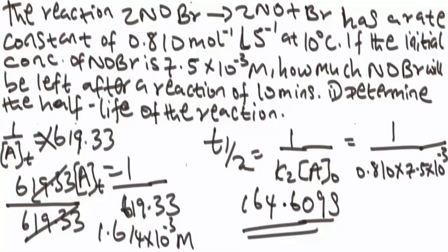Note that the type of reaction in a given problem can easily be identified using the unit of the rate constant. The unit of the rate constant in a zero order reaction is mol per liter per second; in a first order reaction, it is per second; and in a second order reaction, it is liter per mol per second. That is all for this class.